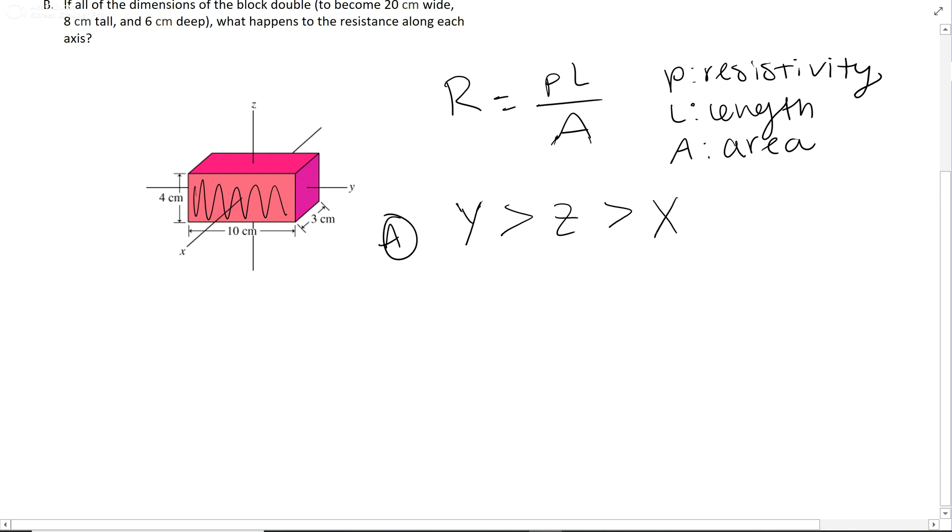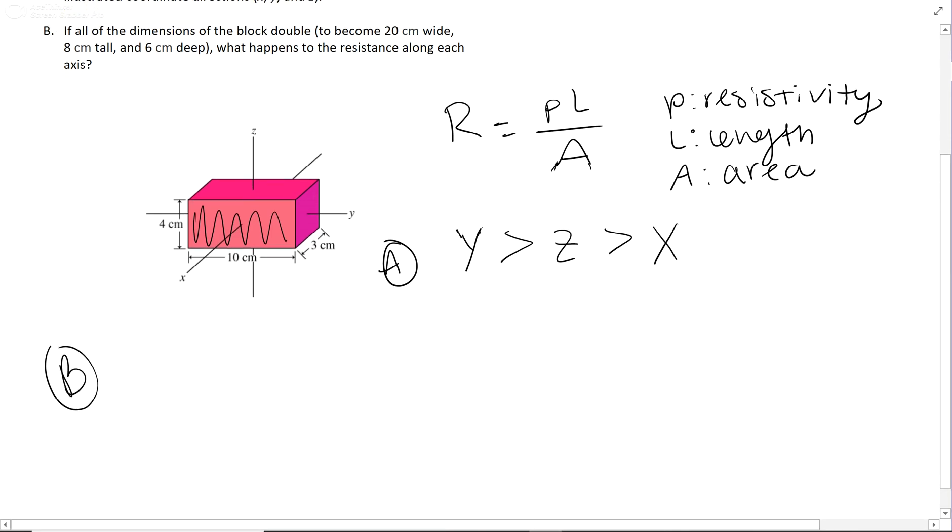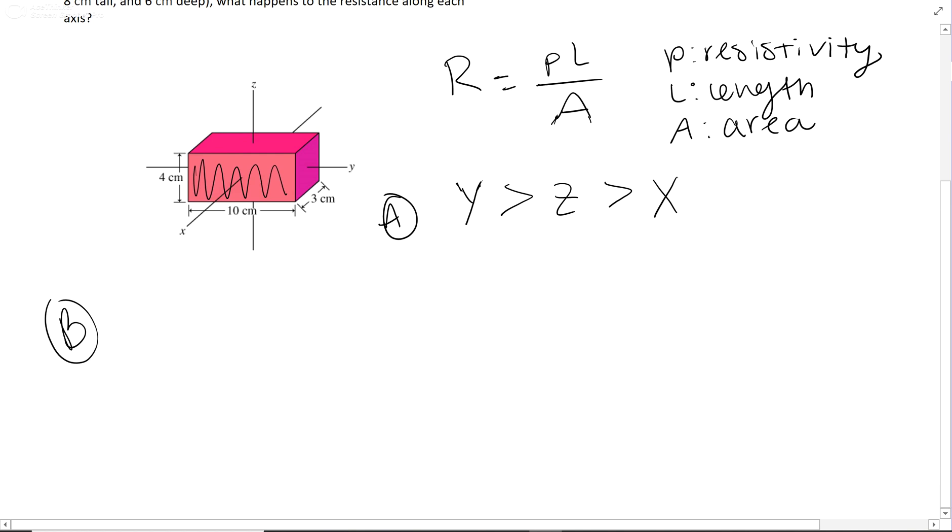So that is your answer for A. The smaller the area, the larger the resistance. For B, it's asking us if all the dimensions were doubled, what happens to the resistance? So we have our resistance equation, same thing.